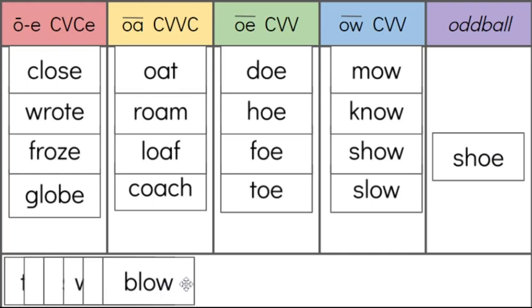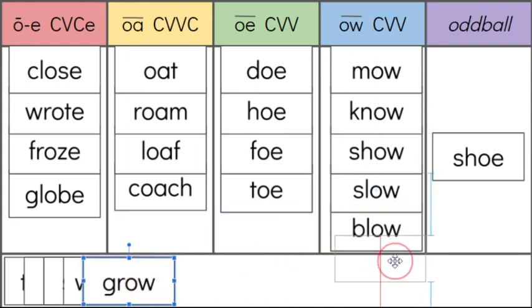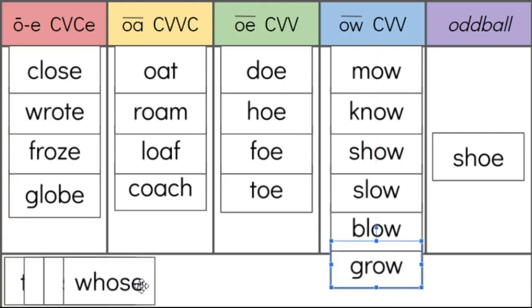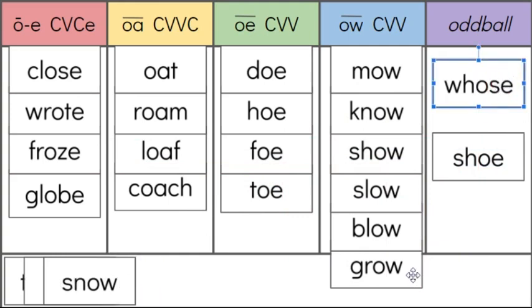Our next one here is BLOW. The O-W. GROW. O-W again. WHOSE. OO. That was that oddball one again, with the OO sound even though it looks like it would be a long O. SNOW. O-W. We'll just keep stacking these up here.